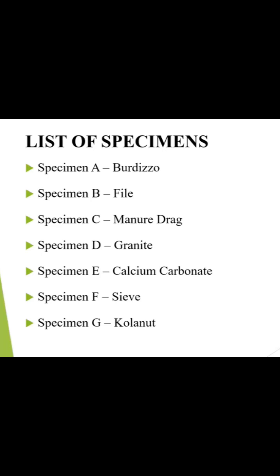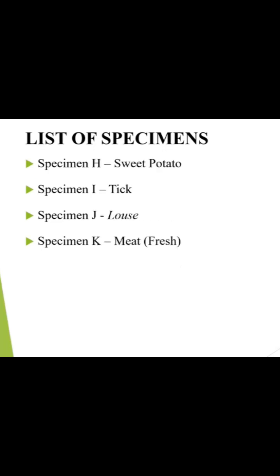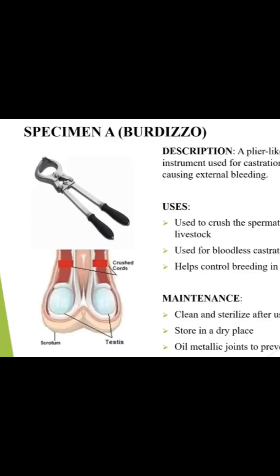Specimen F is a sieve, specimen G is Collar Naut, specimen H is Sweet Potato, specimen I is Tick, specimen J is a Louse, and lastly specimen K is a fresh meat.